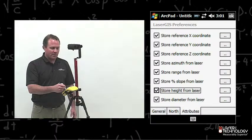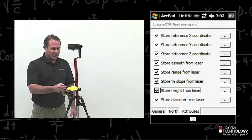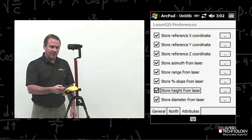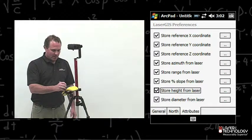The next tab is Attributes. Under Attributes, you're going to see all LaserGIS Preferences. These are all defaulted checkmarked. I'm going to leave all these attributes checked. Press the OK.